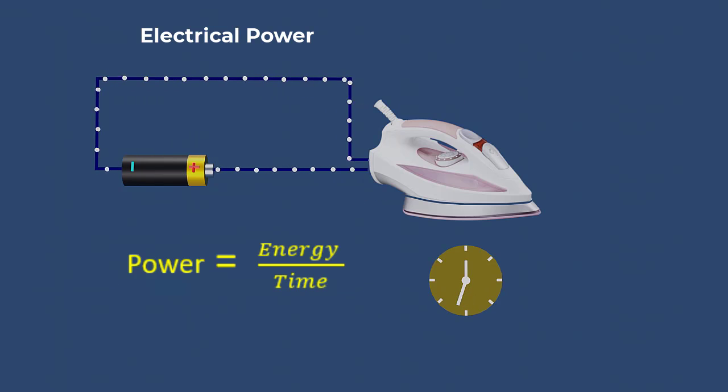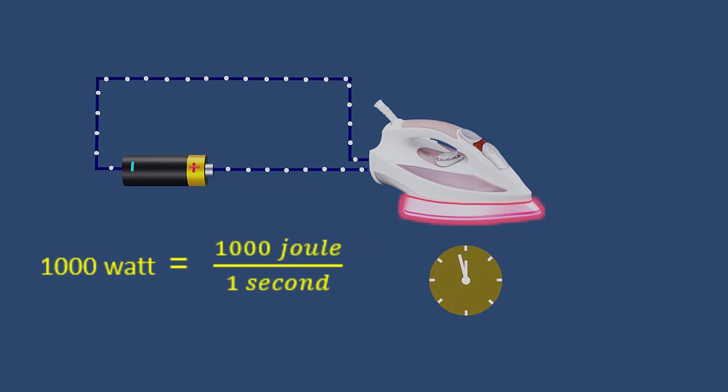A device that consumes more units of energy in one second has a higher power rating. For example, an iron consumes 1000 watts, which indicates 1000 units of energy consumed by the device in one second.